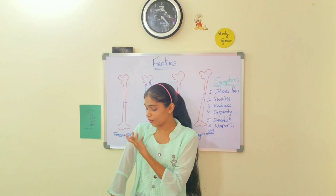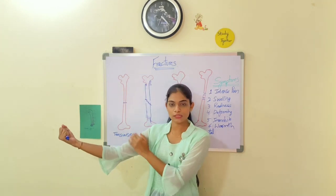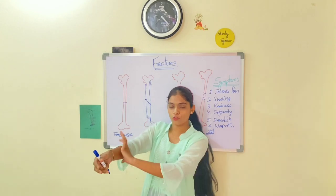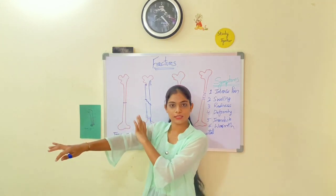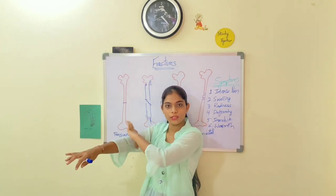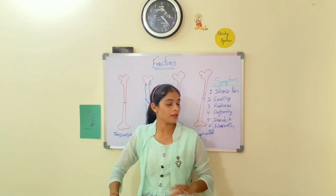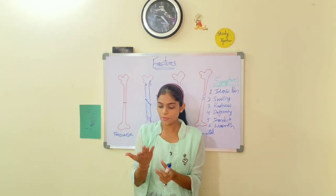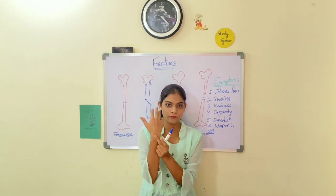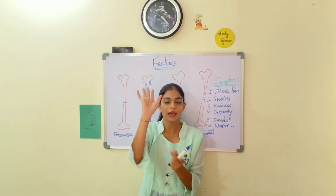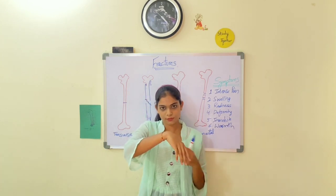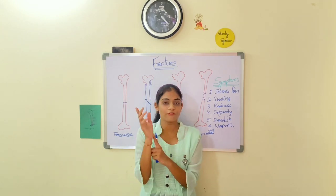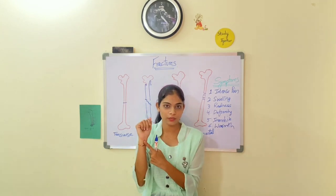If I have a fracture at my humerus, this arm bone, I can't lift my hand or forearm because this bone is supporting my whole hand. You also see a deformity — if I have a fracture at my wrist joint, I'll have a deformity like this. I can't go for normal movement when I have a fracture at my wrist joint.